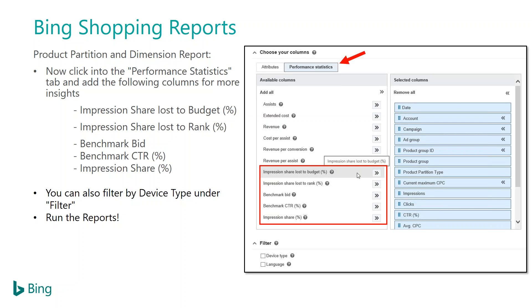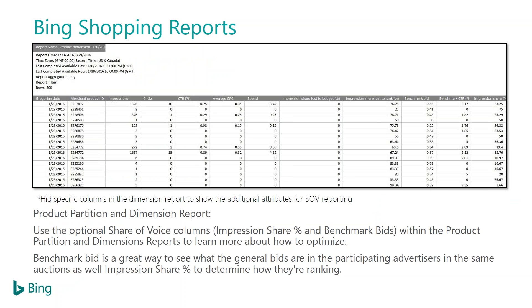When you're in the UI using the dimensions or partition report, add these attributes to your columns and run the report. You can also filter by device type — desktop, tablet, and mobile. Run those reports and you'll get a data output. I had to hide some irrelevant columns to highlight the additional attributes. We call this 'share of voice reporting' internally.